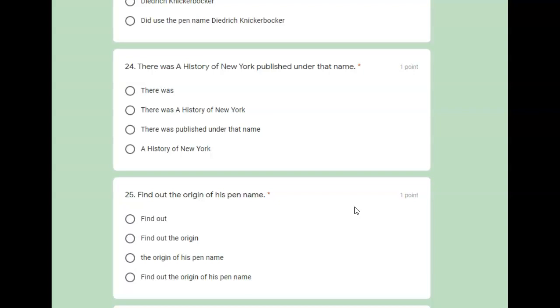And then let's do 24. There was a history of New York published under that name. A history of New York is all capitalized. That's the title of a book. So who or what is the sentence about? That book, a history of New York published under his name. What about it? There was. That's it. That's how you do 8.4.